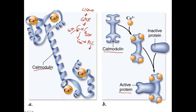Phospholipase C produced IP3 and diacylglycerol. Considering IP3 here, we saw that it caused the release of calcium from the stores in the endoplasmic reticulum lumen, so that calcium was released into the cytoplasm where it binds to proteins and activates them. One of those is calmodulin, and calmodulin when bound to calcium can activate further downstream proteins, leading to the cellular response.